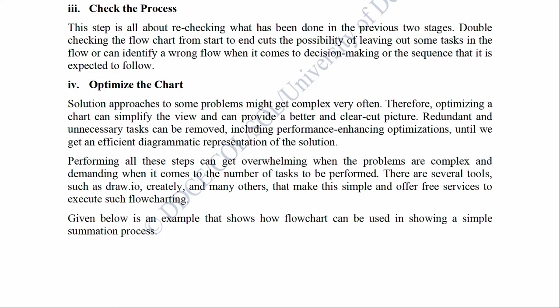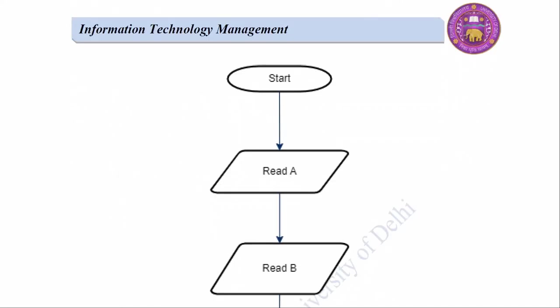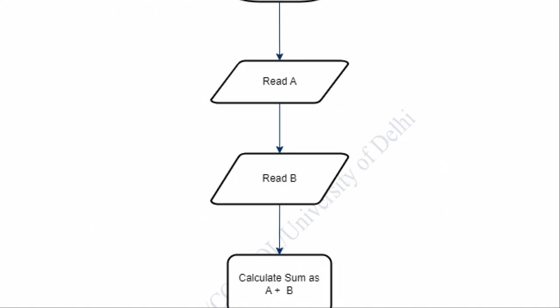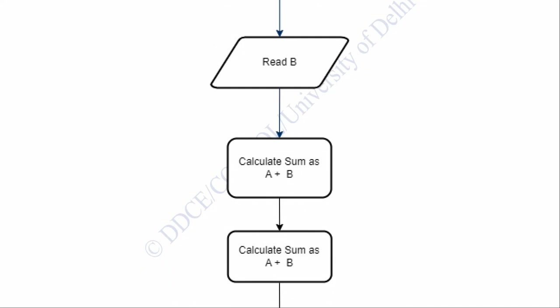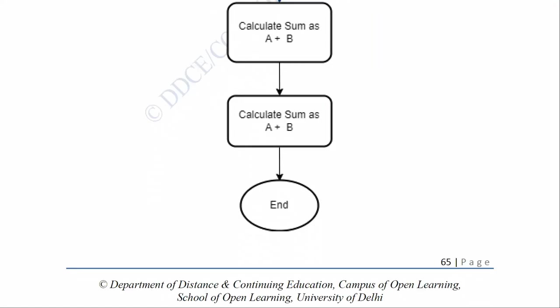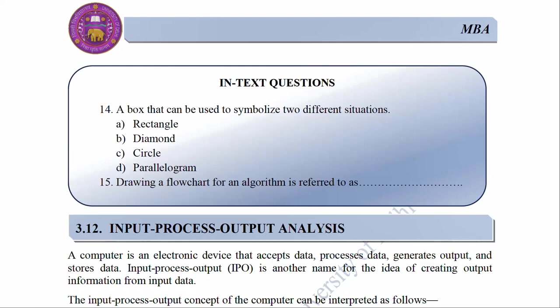Given below is an example showing how a flowchart can be used for a simple summation process: Start → Read A → Read B → Calculate sum as A + B → End. In-text questions: Number 14 — A box that can be used to symbolize two different situations: A. Rectangle, B. Diamond, C. Circle, D. Parallelogram. Drawing a flowchart for an algorithm is referred to as dash.